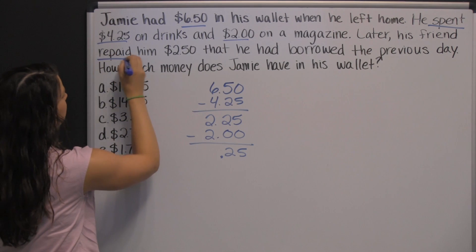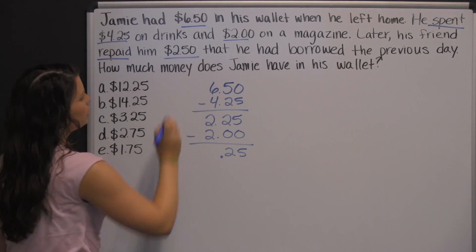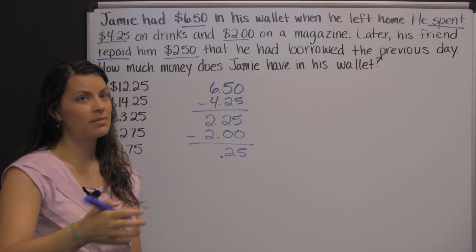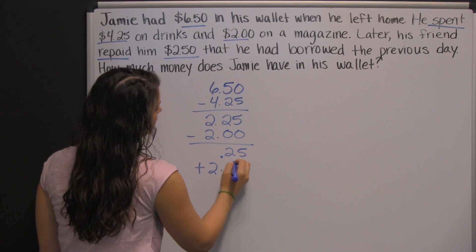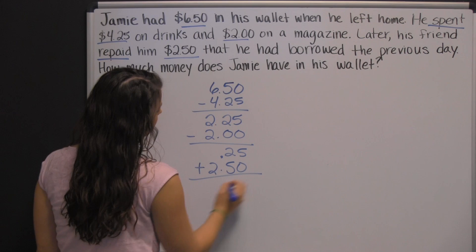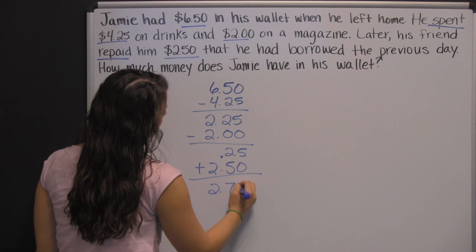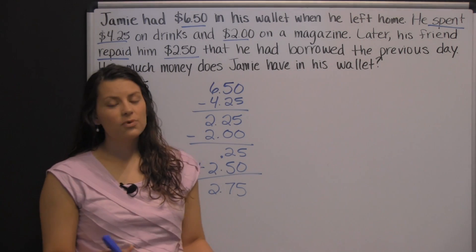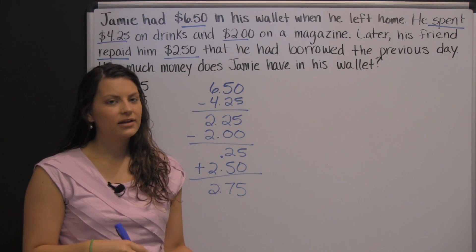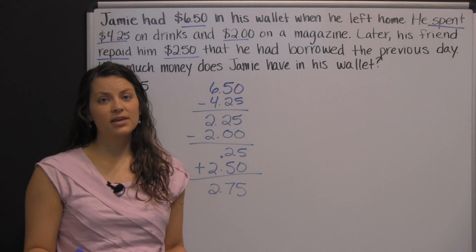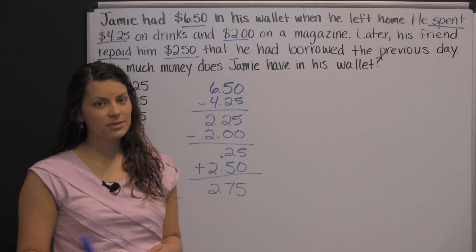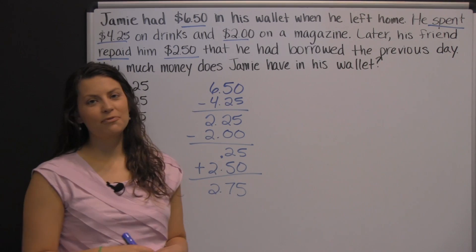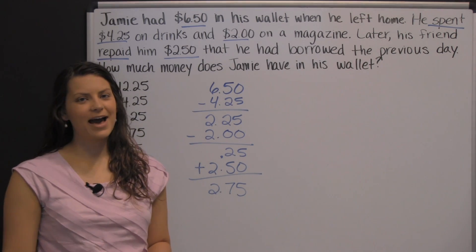But then his friend repaid him two dollars and fifty cents, which means we add to the amount of money that he has. So we add two dollars and fifty cents, which gives him two dollars and seventy-five cents. You just have to look for those keywords like 'spent' and 'repaid' to make sure you're doing the right thing — either subtracting or adding depending on what's happening.